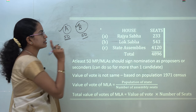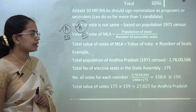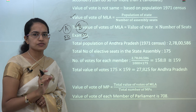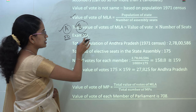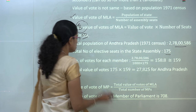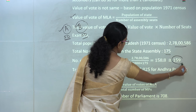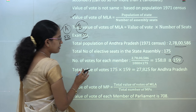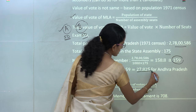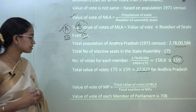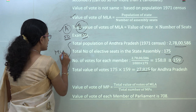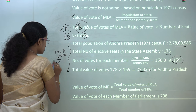The value of votes of an MLA is defined by the population of the state and the number of seats. For example, taking Andhra Pradesh with 175 seats, the value of votes of each member would be 159, and the total value of votes from Andhra Pradesh would be 159 multiplied by the number of seats, giving approximately 27,000 as the total value of votes from Andhra Pradesh.